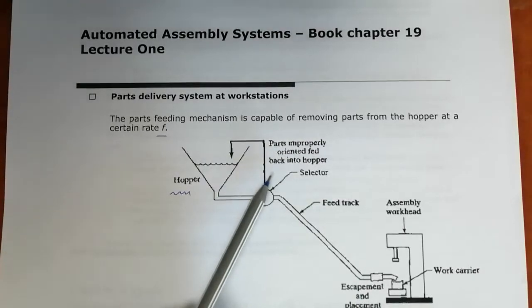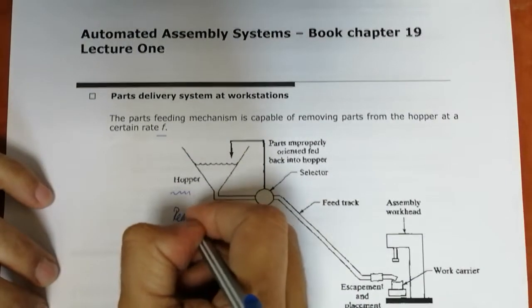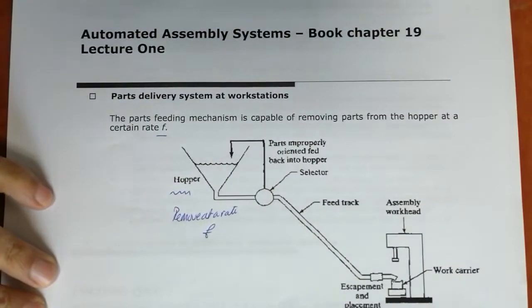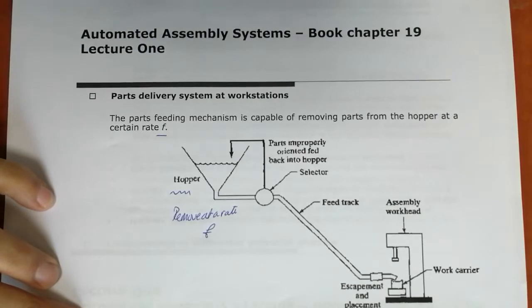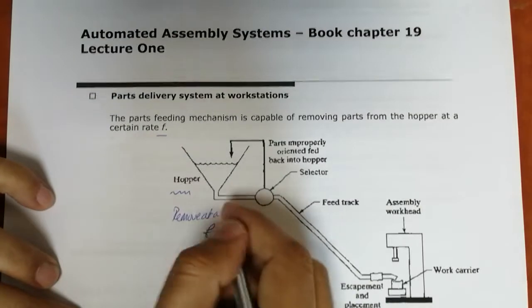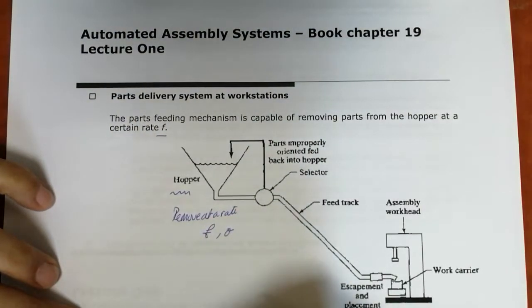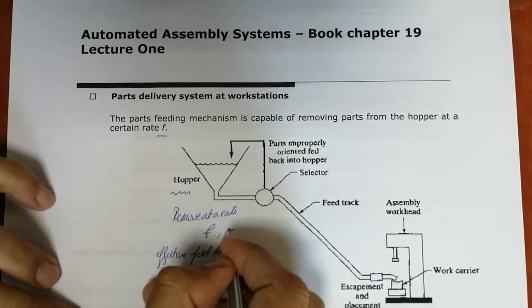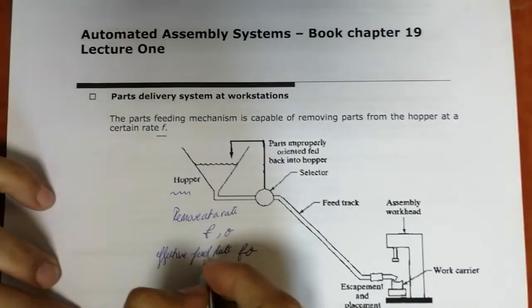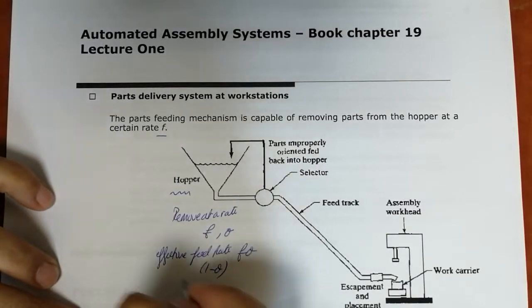The part feeding mechanism is capable of removing parts from the hopper at a certain rate F. These parts are assumed to be randomly oriented initially, so they must be presented to the selector or orienter to establish the correct orientation. In the case of a selector, a certain proportion of parts will be correctly oriented initially and allowed to pass through. The remaining parts are rejected back into the hopper. We define phi (φ) as the proportion of components that pass through the system, so the effective feed rate equals F times φ.